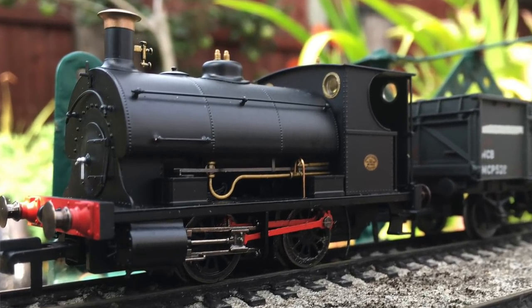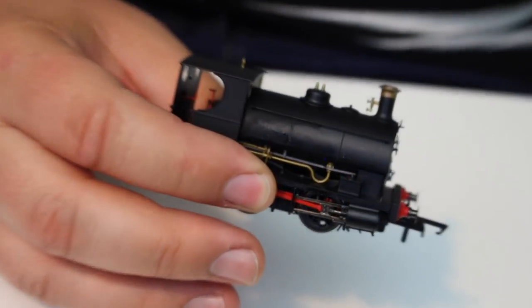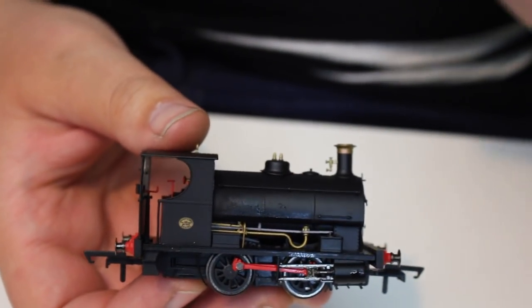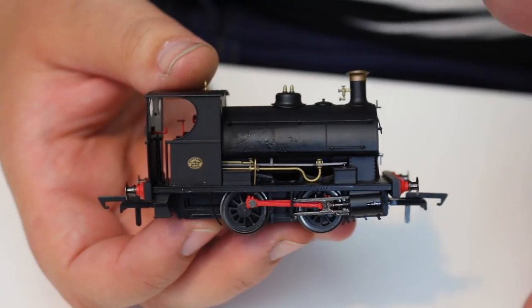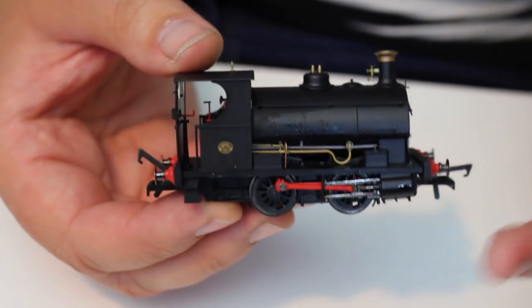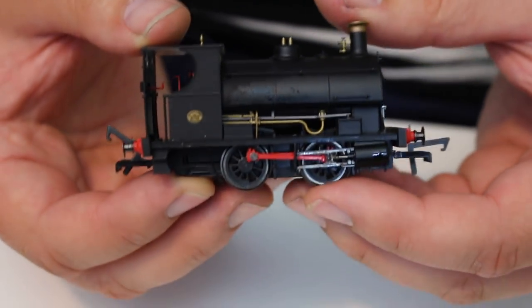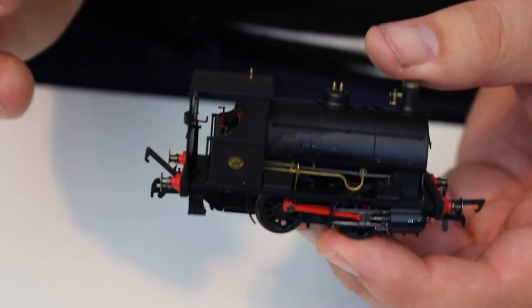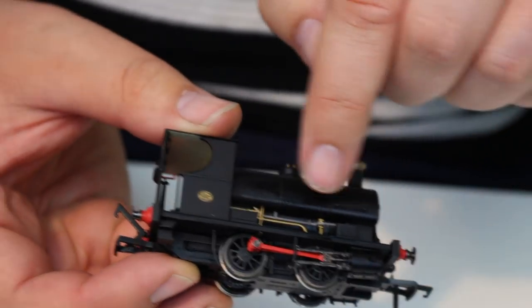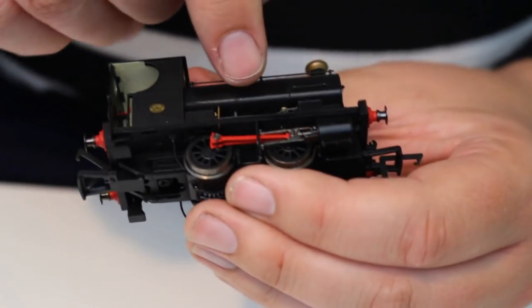Above the running plate we've got I think it's a full cast metal boiler and that provides a lot of the weight. But it also means if you want to DCC chip these you have to be quite careful about how you do it. That said I think there's a proprietary four pin DCC socket inside these and they're designed to take Hornby's own proprietary DCC chip. I've seen a lot of videos online about how to do that so it does appear to be quite straightforward if a little bit fiddly. You have to be careful how you dismantle this just to make sure you don't break any of this pipework.